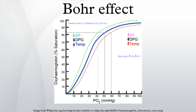In oxyhemoglobin, these ion pairings are absent and these groups increase in acidity. Consequently, a proton is released for every 2 O2 bound. Specifically, this reciprocal coupling of protons and oxygen is the Bohr effect.